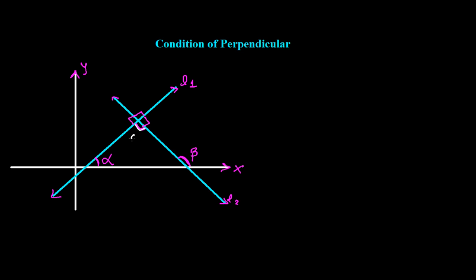If the angle between both is 90 degrees here, then what we can write: if L1 is perpendicular to L2, then beta should be equal with 90 plus alpha. Because what we have learned is that in a triangle, the sum of the internal two angles is equal with the external angle. So 90 plus this alpha should be equal with beta.